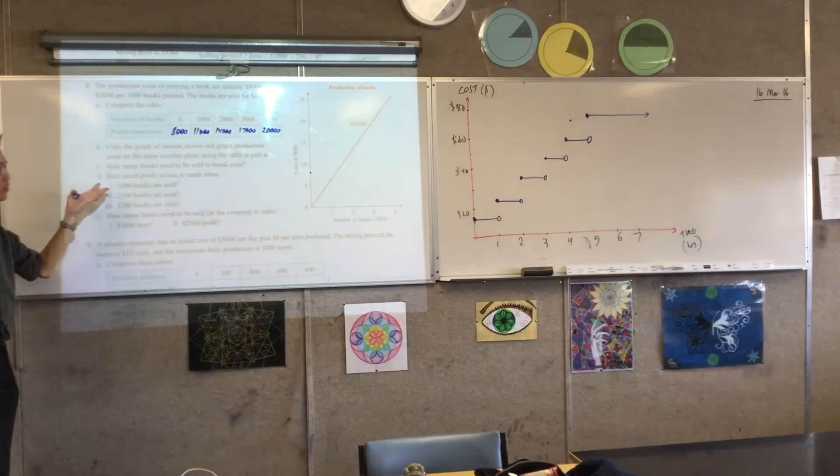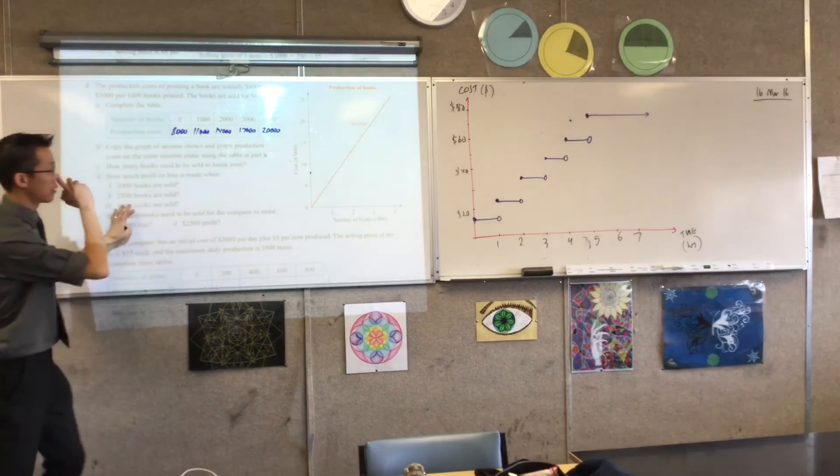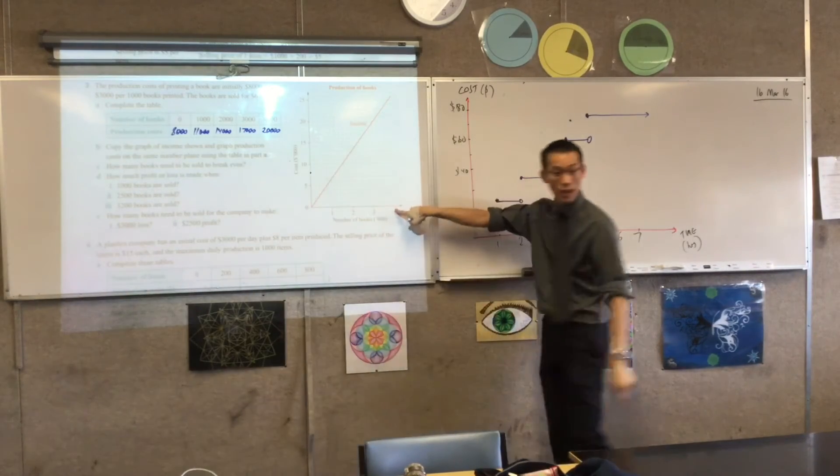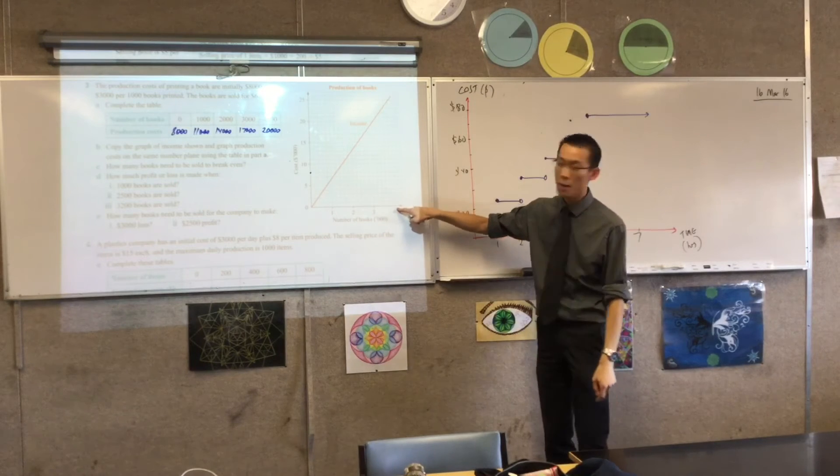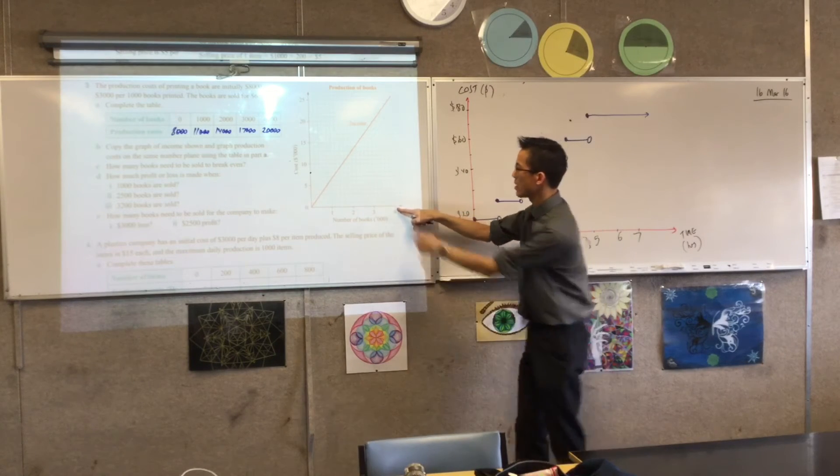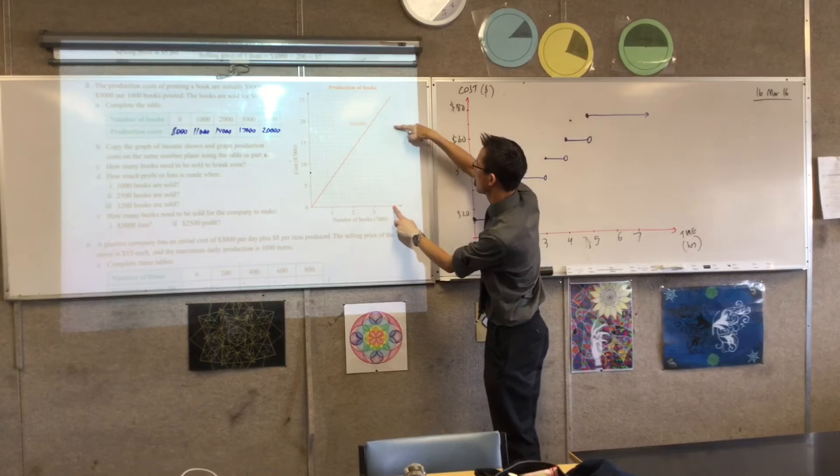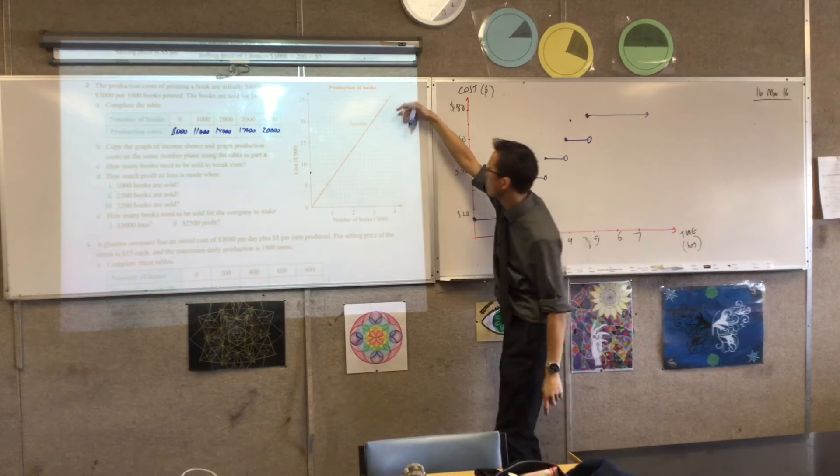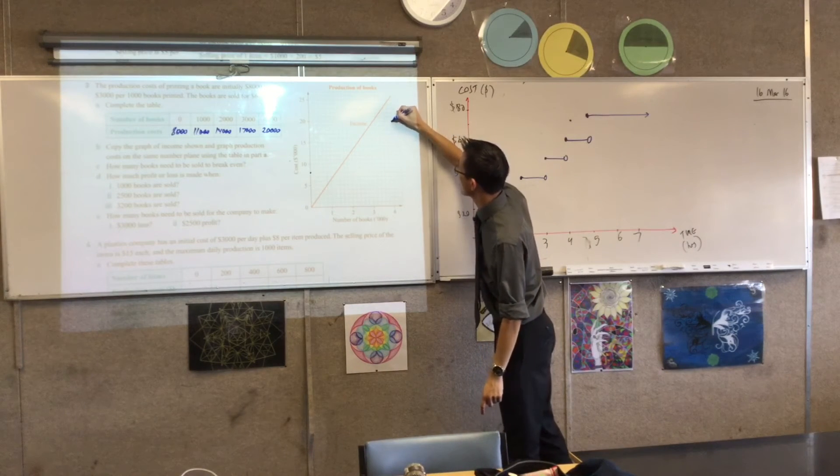I can put a few more points onto this. I'm just going to go straight for the end. 4,000 books, which is over here, is going to cost how much? $20,000. So if I go up, that's going to be here. Does that look okay? Might be off by one or two squares, but I think that's pretty close.